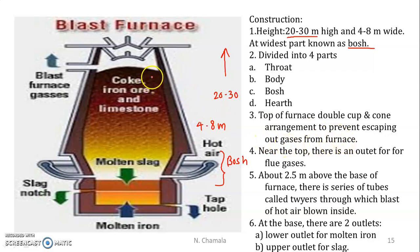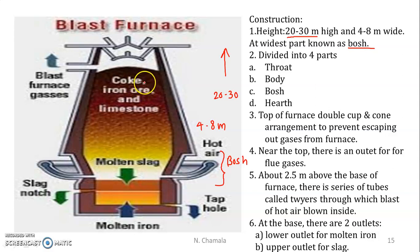At the top it is provided with the double cup and cone arrangement to prevent the escaping of hot gases from inside the furnace to outside. Near the top there is an outlet for the flue gases — waste gases — as can be seen at the top opening.